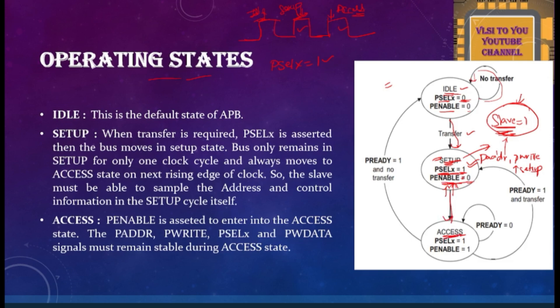Now coming to the access state — this is where the actual transfer of data takes place. P_SELECT is still 1 from the setup phase, and now P_ENABLE becomes 1, meaning the slave is indicating it is ready for read and write operations. However, based on the P_READY value, the slave will actually accept the data. Whether you want to read from the slave or write into the slave, P_READY is what you check. If P_READY equals 0, even though P_SELECT and P_ENABLE are both 1, the bus must remain and wait.